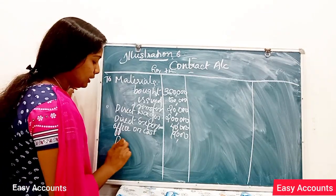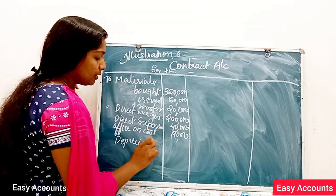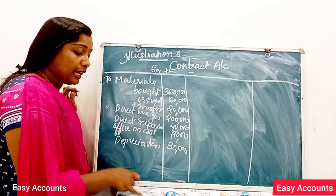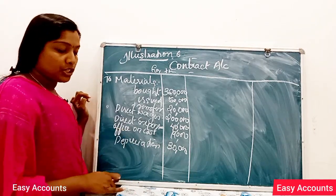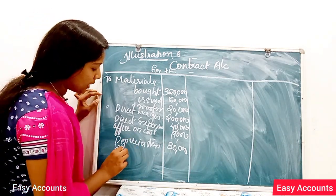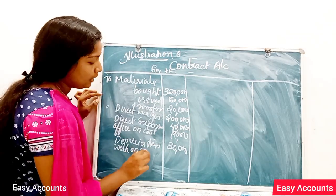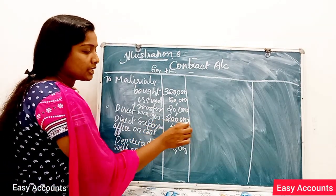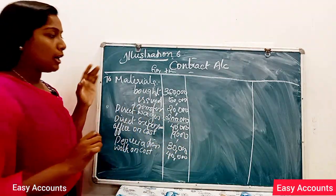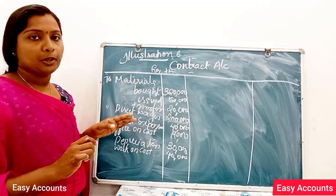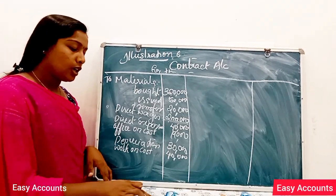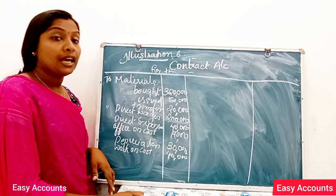Then depreciation. We call depreciation. Depreciation is $30. If you have extra work completed, you can get the cost of extra work completed. The cost of extra work completed is $11,000.